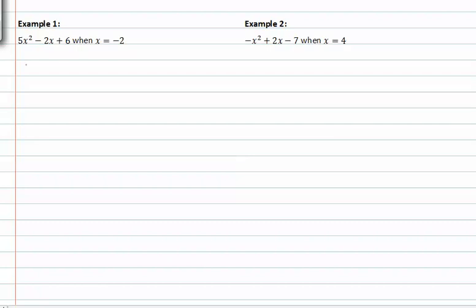I'm going to go ahead and put parentheses wherever there was an x and then fill in all the other pieces. Now I'm going to take that value for x and substitute it in where my parentheses were. Now I can just simplify this using order of operations.